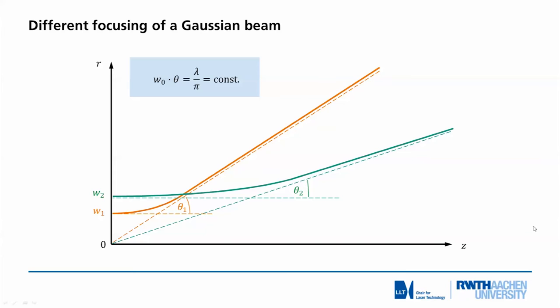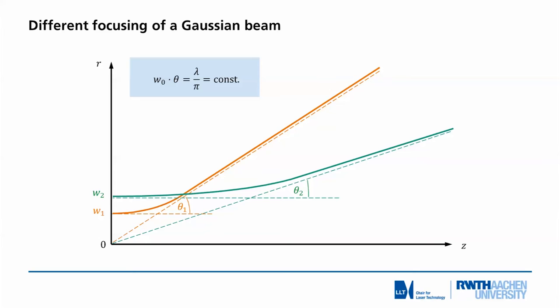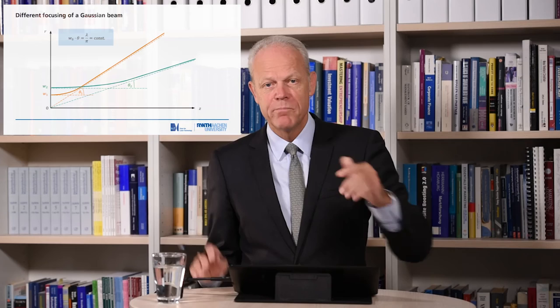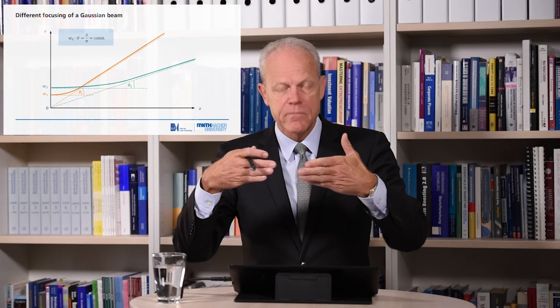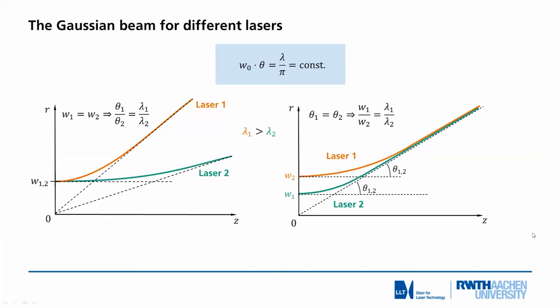So if we have a smaller divergence, the beam waist will be larger. If we have a higher convergence or divergence, the beam waist will be smaller. By the way, this means if we look for really small foci, we better focus with high convergence or high divergence and high angles of the beam. Then we get small focal radii.